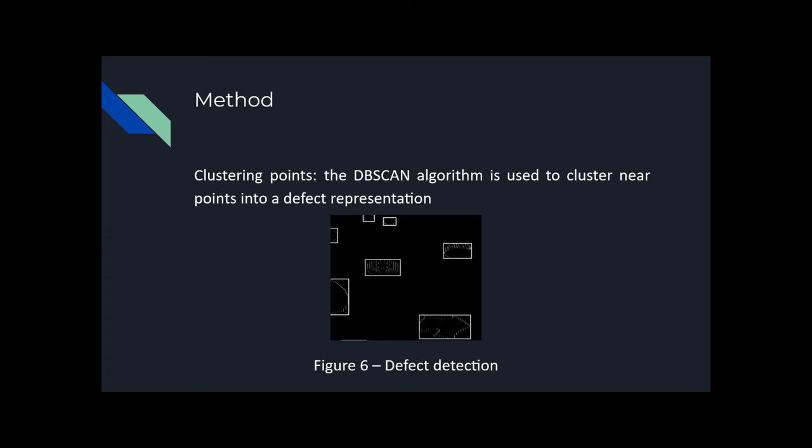Also, as these points are close to each other, we propose to use the DBSCAN algorithm to find the cluster, and that is the defect, the identification itself. This algorithm was chosen because of the simplicity and the capacity to identify clusters, in our case defects, without knowing the number of clusters inside the data, what is the limitation of the K-means algorithm, for example.